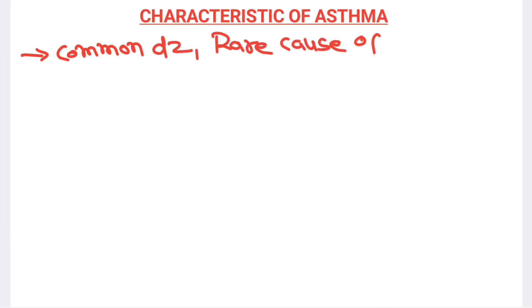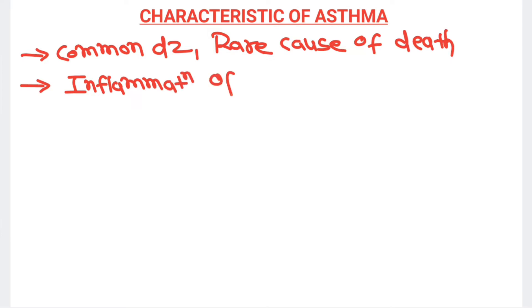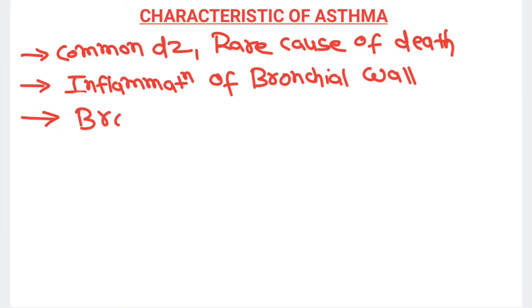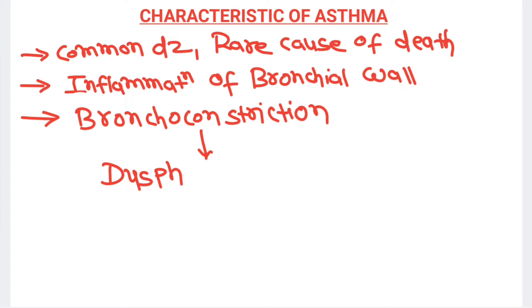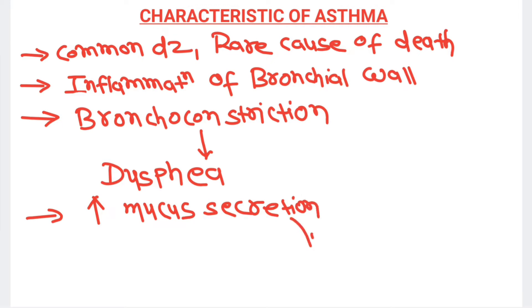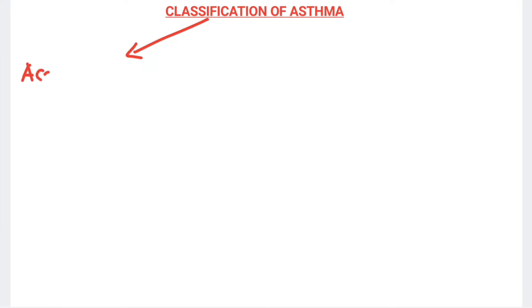Asthma is a very common disease but it is a very rare cause of death. There will be inflammation of the bronchial wall, causing bronchoconstriction, and the patient will complain of difficulty in breathing, known as dyspnea. Because of interleukin-13 production, the patient will have increased mucus production in the respiratory tract, so the patient will have cough with expectoration.